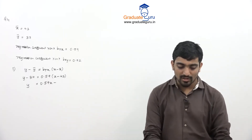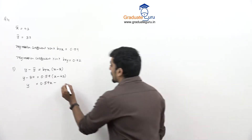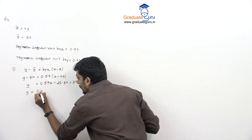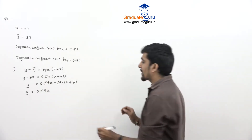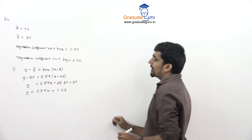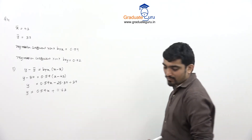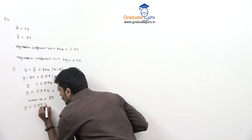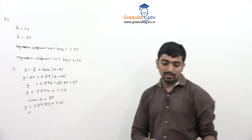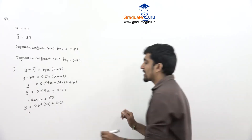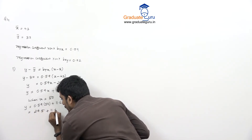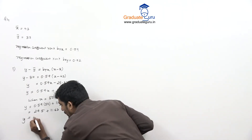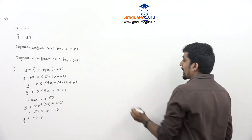Computing: 0.59 × 43 = 25.37, so y = 0.59x − 25.37 + 37 = 0.59x + 11.63. When x = 50: y = 0.59 × 50 + 11.63 = 29.5 + 11.63 = 41.13. So y = 41.13 when x = 50. That completes the first part of question 4.